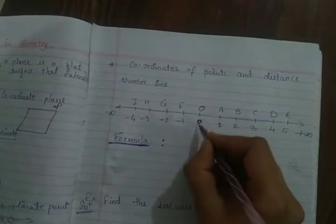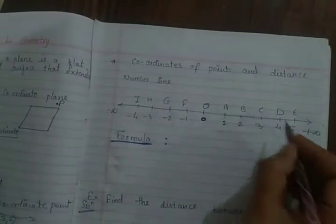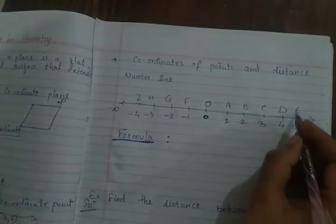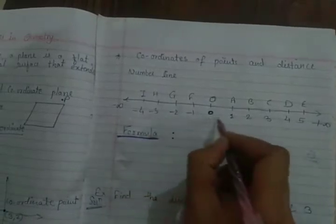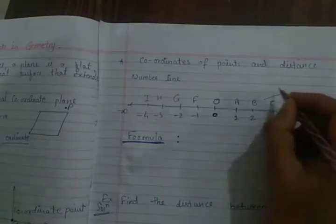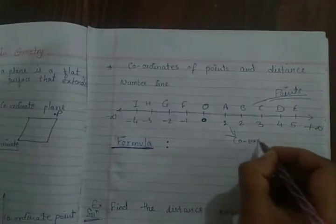Now, the alphabets I used here: 0 represents as O, 1 represents as A, 2 represents as B, 3 represents as C, 4 represents as D, 5 represents as E. All the alphabets used to show the numbers on the number line are known as the points, and the alphabets which represent the numbers on the number line are known as the coordinates of that point.